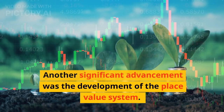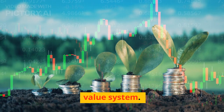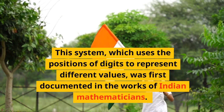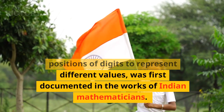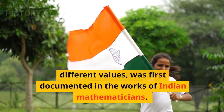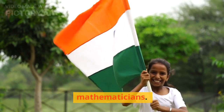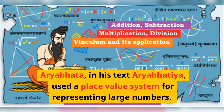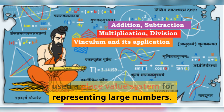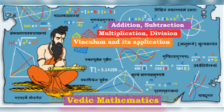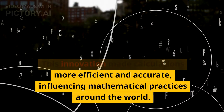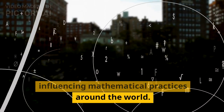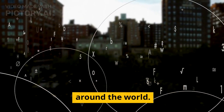Another significant advancement was the development of the place value system. This system, which uses the positions of digits to represent different values, was first documented in the works of Indian mathematicians. Aryabhata, in his text Aryabhatiya, used a place value system for representing large numbers. This innovation made calculations more efficient and accurate, influencing mathematical practices around the world.